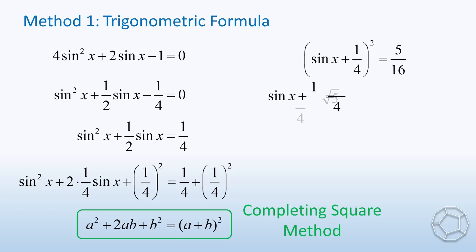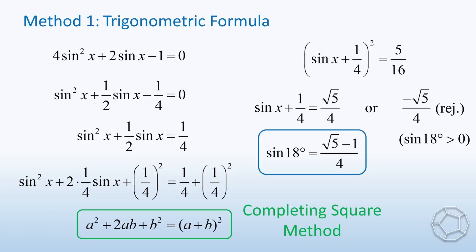Taking square roots on both sides and reject the negative answer. Again, because sine 18 degrees is larger than 0, so we get the exact value of sine 18 degrees, which is square root 5 minus 1 over 4.